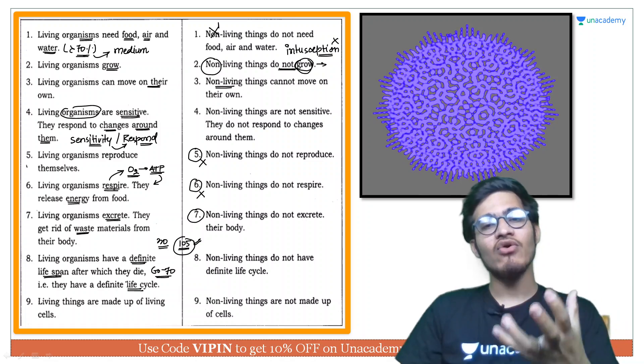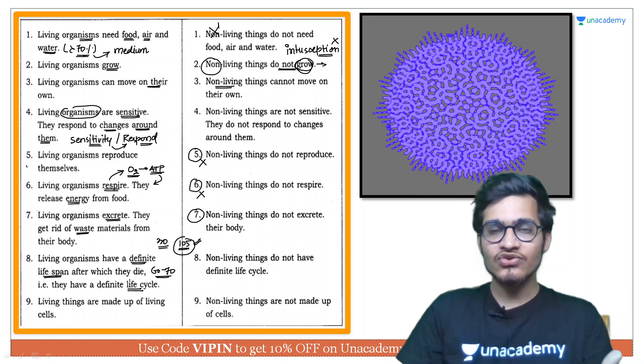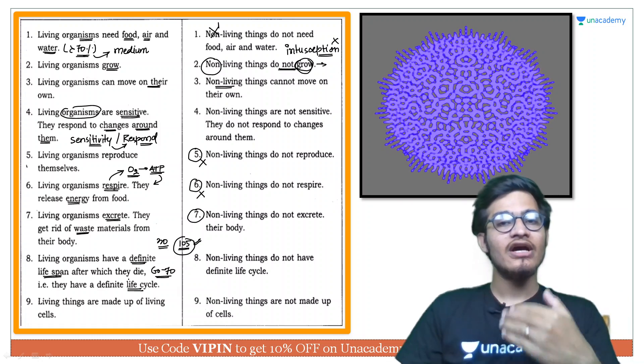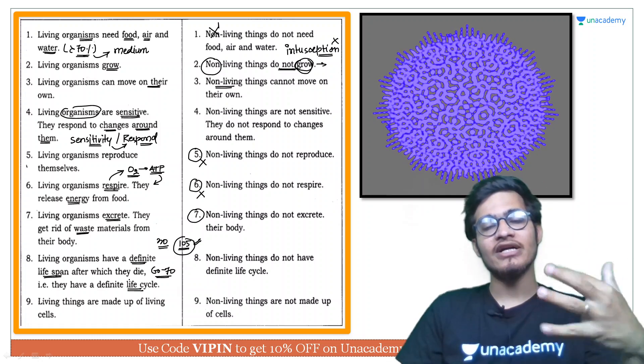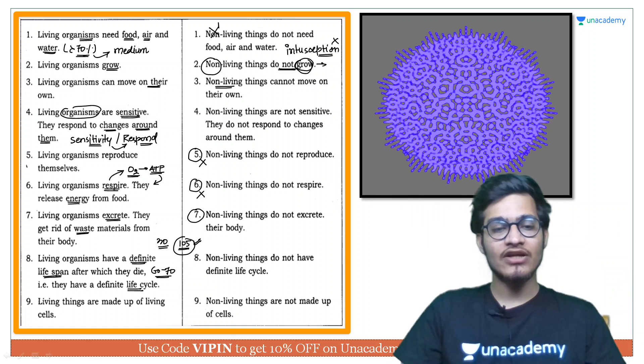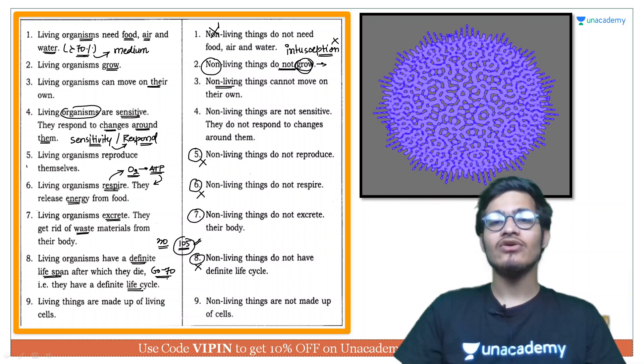So definite life cycle bhi yaha par hoti hai. Aap zygote se apne jeevan ki shuruwaat karte hain, then aap grow karke ek adult bante hain, adult banne ke baad you used to reproduce and you used to produce more offspring like you. Aur again phir aapke jo bachche honge woh bhi adult honge and then woh bhi reproduce karna start karenge so there is a cycle but no such cycle is present in non-living organisms.